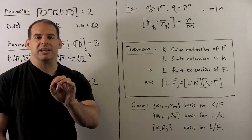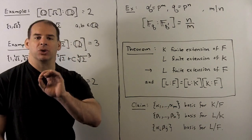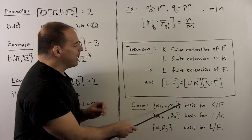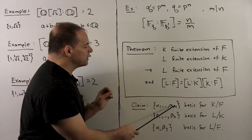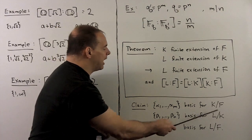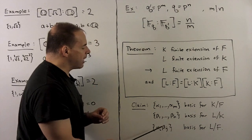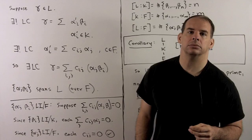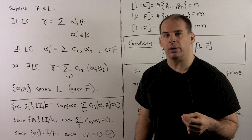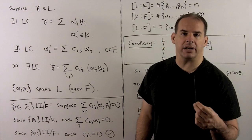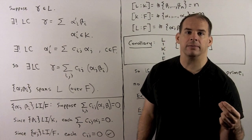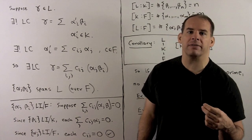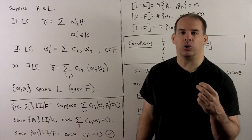For the proof, we choose bases and count to check we have a new basis. If we have a basis for K over F given by the α's, and a basis for L over K given by the β's, we want to show that the products αᵢβⱼ give a basis for L over F. There are three things to show: first, that the αβ's form a spanning set for L over F; then, that the αβ's are linearly independent over F; and finally, the degree formula.